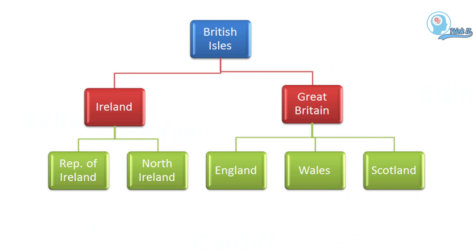Now let's see this whole concept with the help of this particular diagram. The British Isles has two major islands. The first one is Ireland and the second one is Great Britain. Ireland consists of two countries: the first one is Republic of Ireland and the second is Northern Ireland.